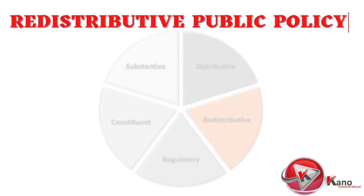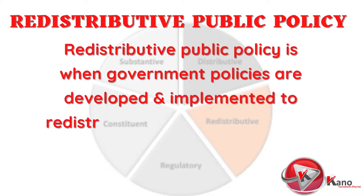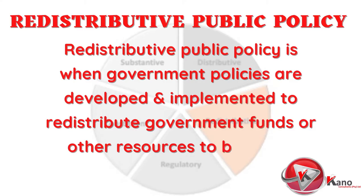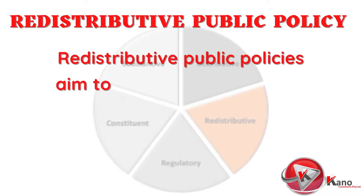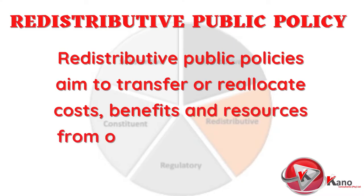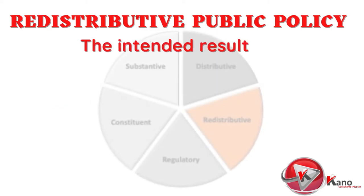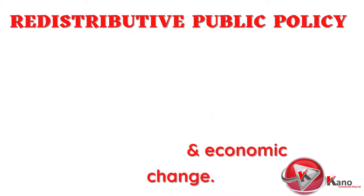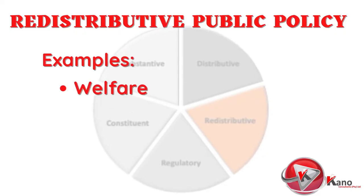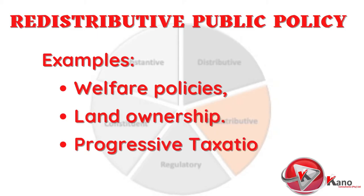The next type of public policy is redistributive public policy. This is when government policies are developed and implemented with the main aim of redistributing government funds or other resources to benefit a particular group within society. The main aim is to transfer or reallocate costs, benefits, and other resources from one collective group to another, with the intention of redesigning or modifying the distribution of resources to affect social and economic change. Examples include welfare policies, policy on land ownership, and progressive taxation policies.